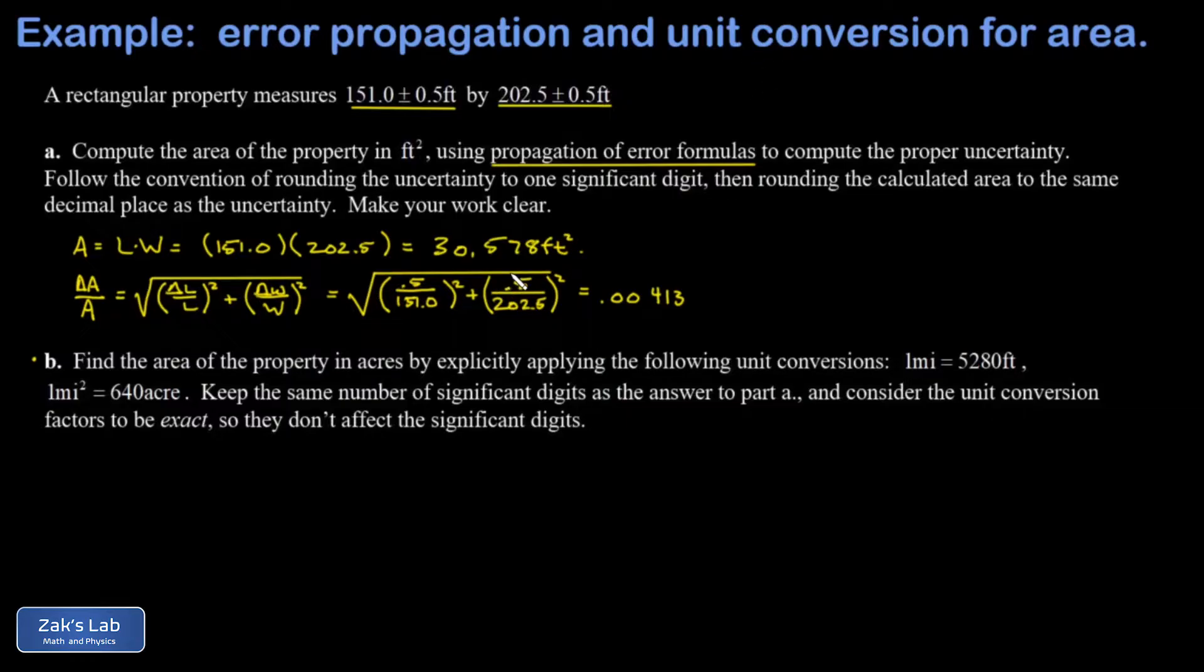And what we need out of this is the actual uncertainty in area instead of the relative uncertainty. So I have to take this 0.00413 and I multiply it by A in order to isolate delta A, the uncertainty in the area. So delta A is going to be A, and I already computed that, 30,578 square feet times this 0.00413. And this gives me 126.3 square feet of uncertainty.